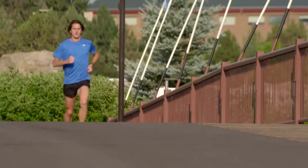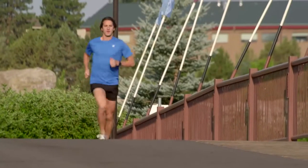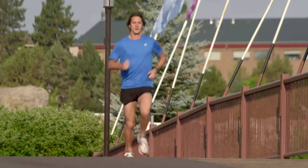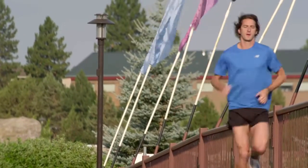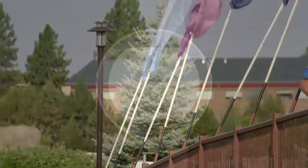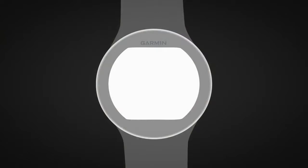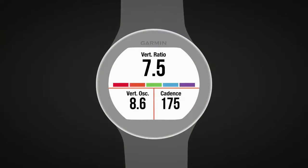To view the running dynamics measurements, put on the HRM Run and make sure it's paired to your watch. During your running activity, scroll down until you see either of the running dynamics screens.